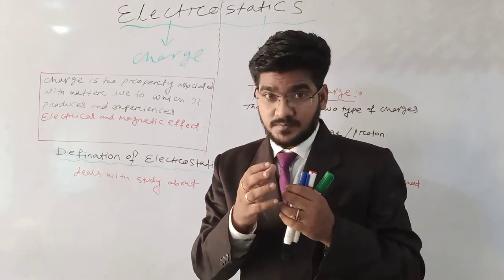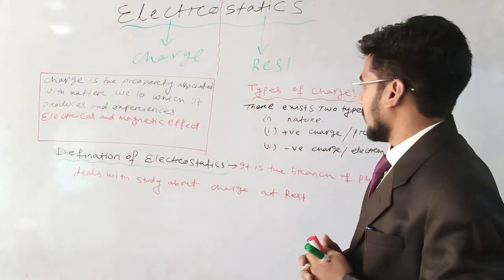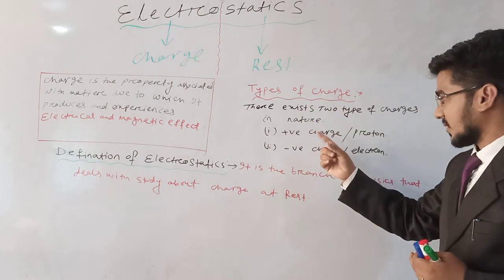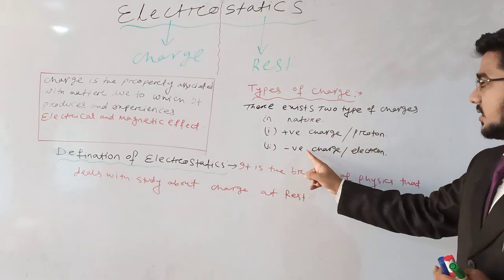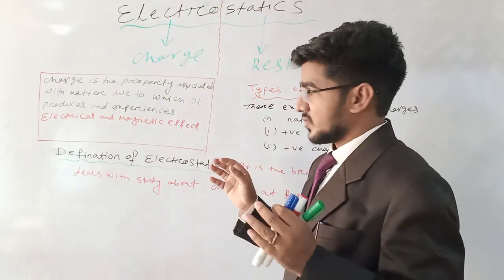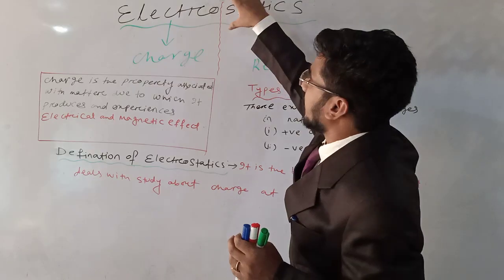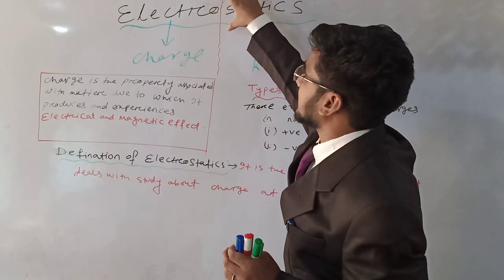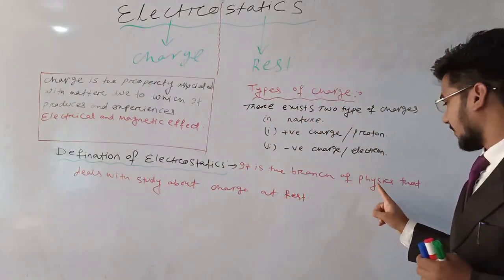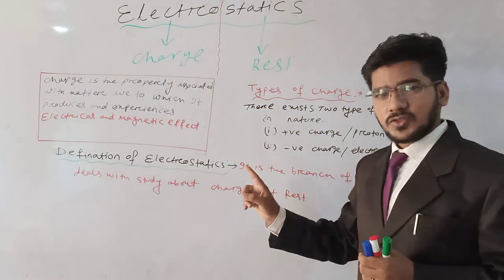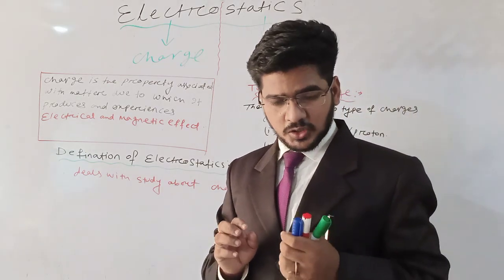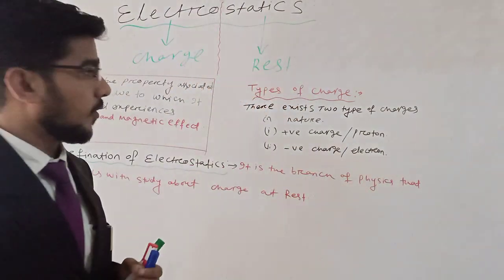Charges are of two types: one is positive, associated with the proton, and another is negative, associated with the electron. Electrostatics is the branch of physics that deals with the study of charge at rest. If charge is moving, what happens then?